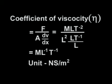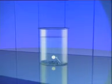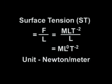Coefficient of viscosity: η = F/(A·dv/dx) = M·L·T⁻²/(L²·L·T⁻¹/L) = M·L⁻¹·T⁻¹. Unit: Newton·second per metre². Surface tension: ST = F/L = M·L·T⁻²/L = M·L⁰·T⁻². Unit: Newton per metre.